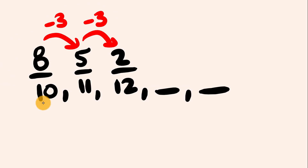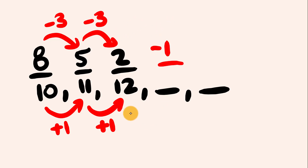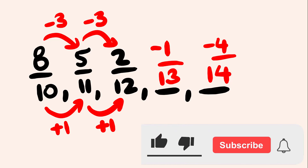On the bottom, from 10 to 11 we're adding 1, and from 11 to 12 we're also adding 1. So following this: 2 minus 3 is −1, and 12 plus 1 is 13 — giving us −1/13. Then −1 minus 3 is −4, and 13 plus 1 is 14 — giving us −4/14. There you have it — a couple of simple tips and tricks on how to find the next term in a sequence of numbers.